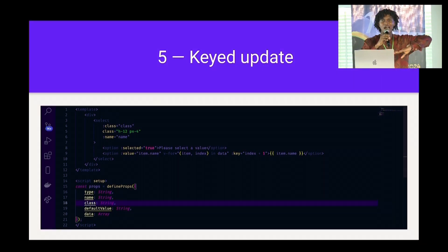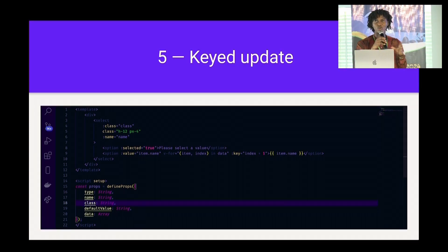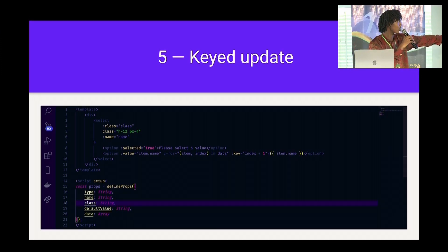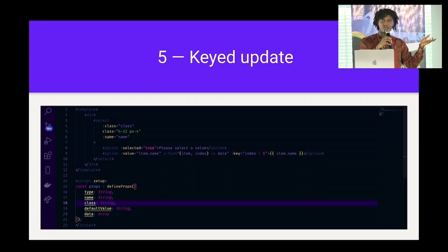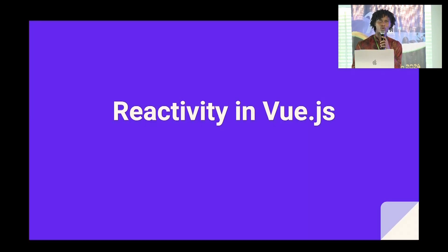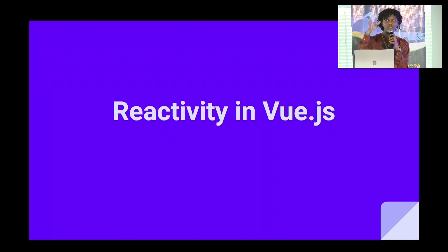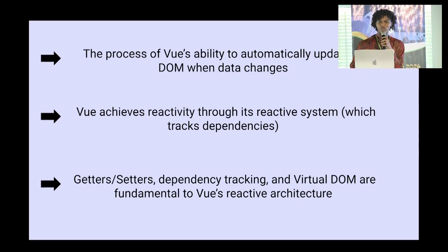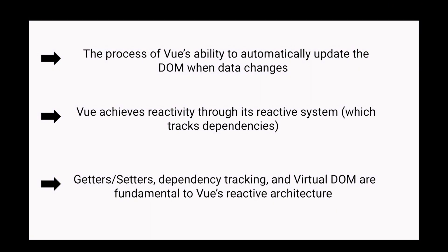Now let's look at key updates. This is basically for people who render arrays of objects or nested arrays. It's another process of how the virtual DOM is updated — passing a default and unique identifier for each value in your array or list. We also have async rendering, which performs asynchronous rendering by batching updates to the virtual DOM. I'll look at batching updates moving forward, but before then let's talk about reactivity in general in Vue.js.